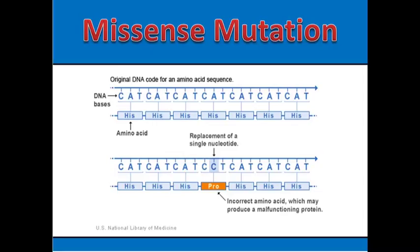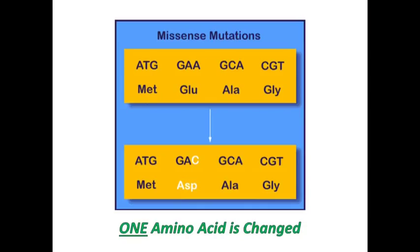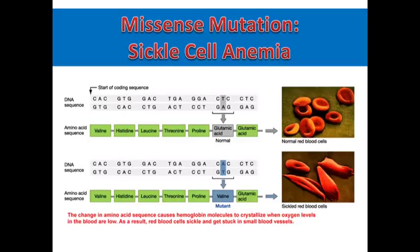A missense mutation is when a substitution causes the identity of one amino acid to change in the protein. Here, we have the codon CAT, which codes for the amino acid histidine. If the substitution causes that codon to be changed to CCT, then the identity of the amino acid will change to proline. Sometimes changing just one amino acid doesn't cause much of a problem, but in the case of sickle cell anemia, changing this glutamic acid to a valine causes a huge problem and can result in a very serious disease.